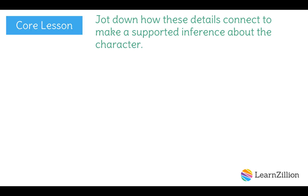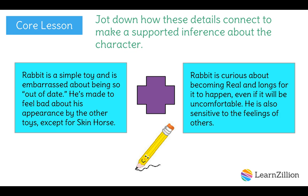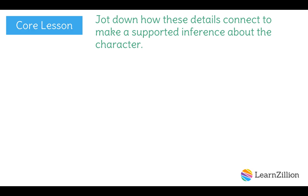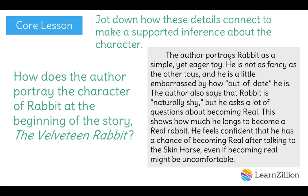My last step is to jot down how these details connect to make a supported inference about the character of Rabbit. I've done some good thinking about this part of the text. All I have to do is take my first inference and add it to my second inference. Before I jot down my final answer, I want to review the original question: How does the author portray the character of Rabbit at the beginning of the story, The Velveteen Rabbit? The author portrays Rabbit as a simple yet eager toy. He's not as fancy as the other toys, and he's a little embarrassed by how out of date he is. The author also says that Rabbit is naturally shy, but he asks a lot of questions about becoming real — this shows how much he longs to become a real rabbit. He feels confident that he has a chance of becoming real after talking to the skin horse, even if becoming real might be uncomfortable.